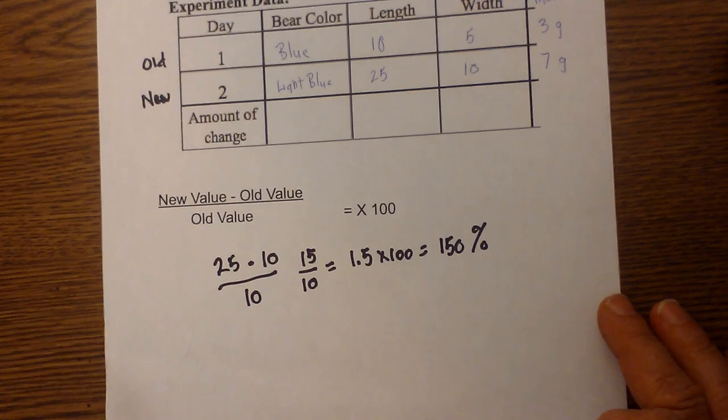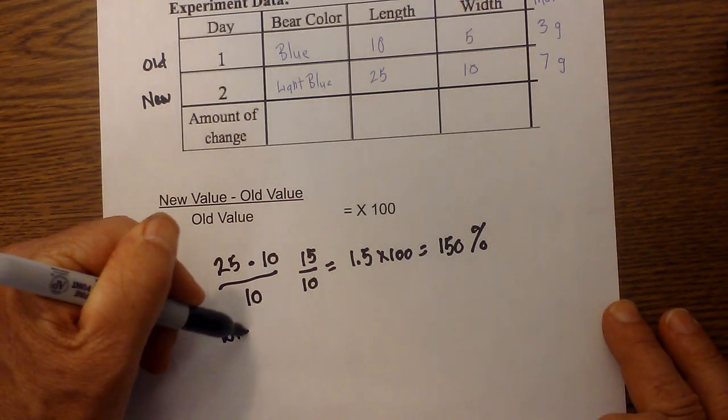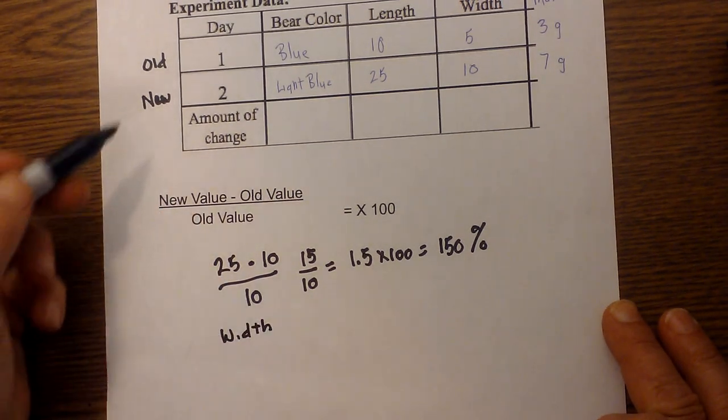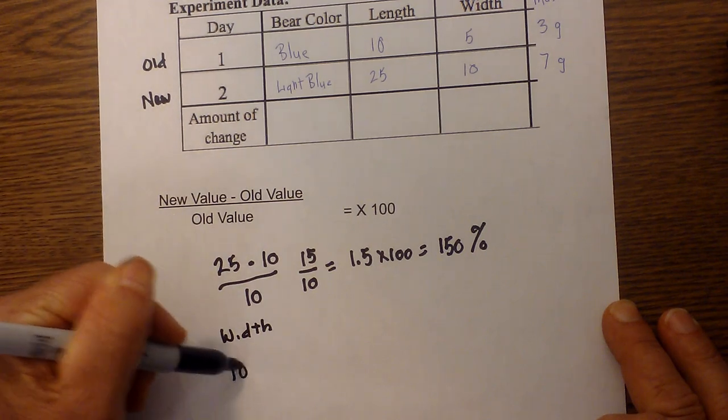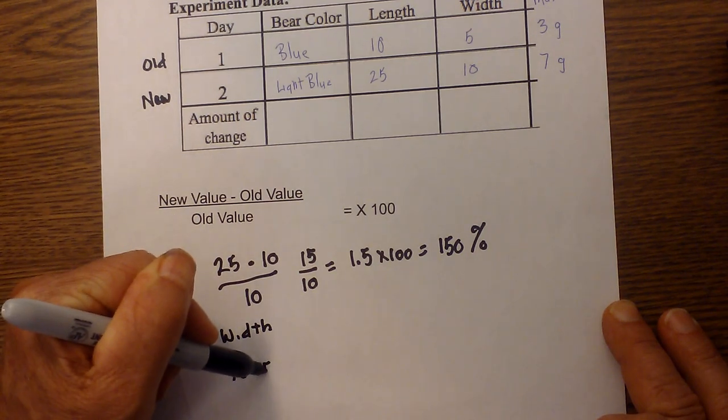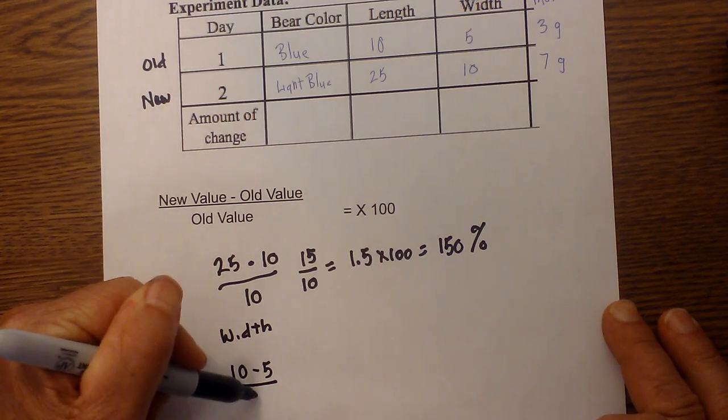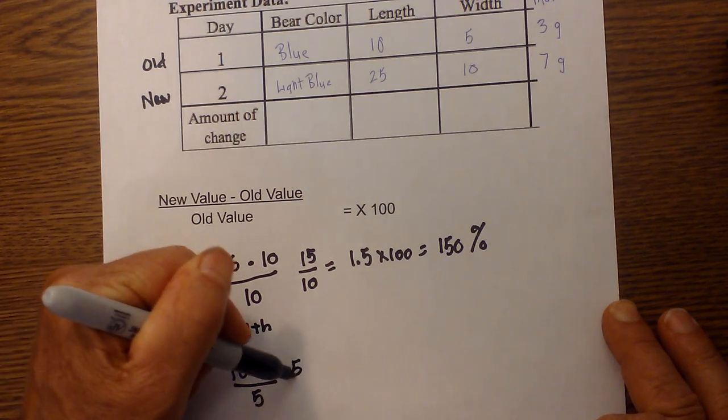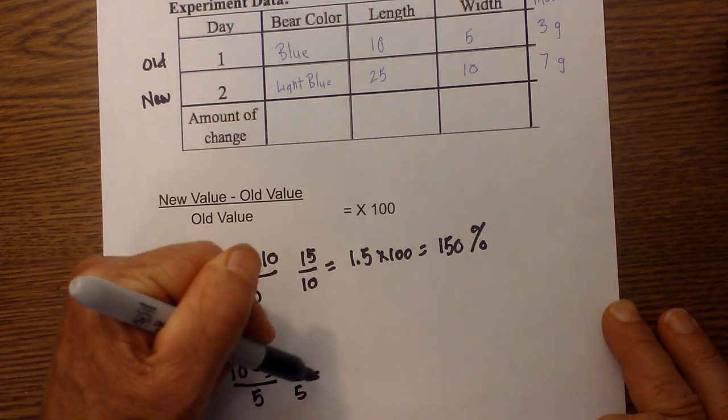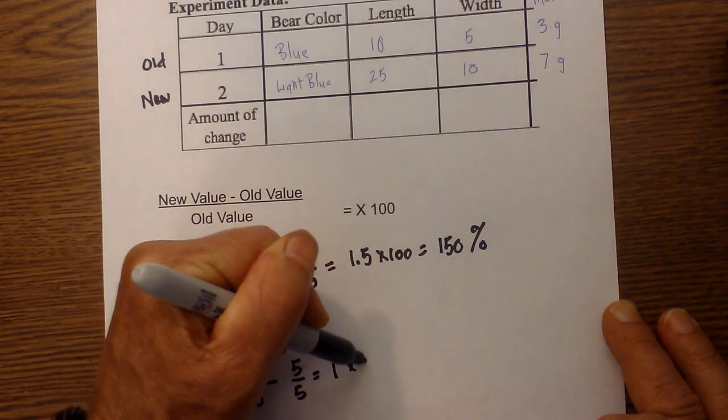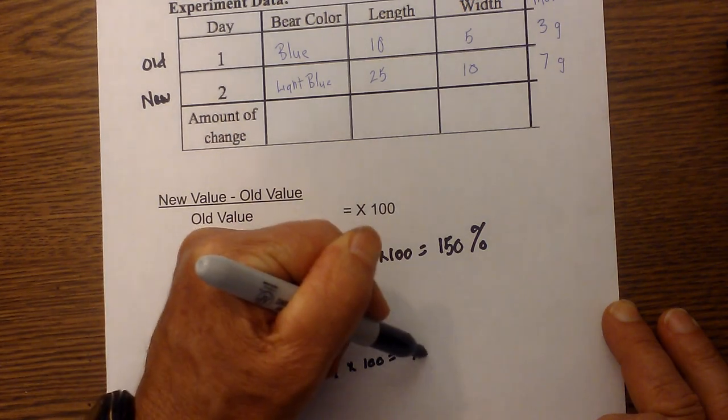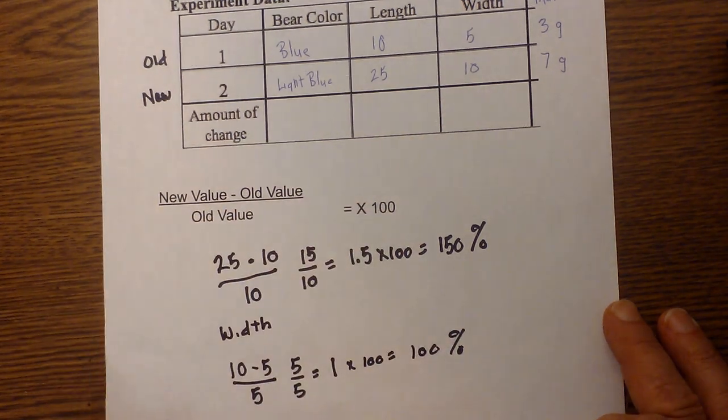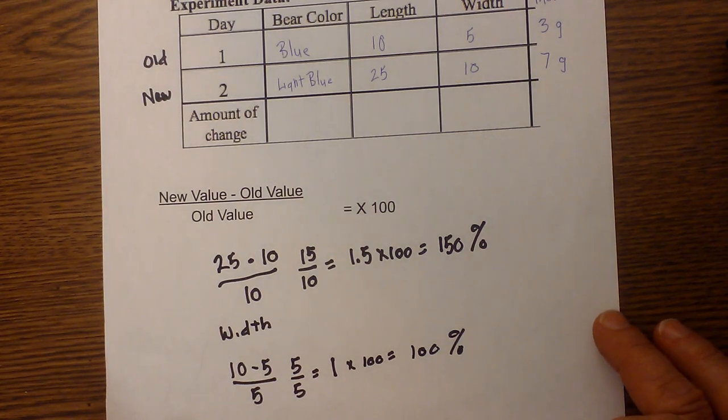Now let's go ahead and work the width. So I'm going to take the new value 10 minus the old value 5 over 5, and that is 10 minus 5 is 5, and 5 over 5 is equal to 1 times 100 is equal to 100 percent. So it increased in value 100 percent.